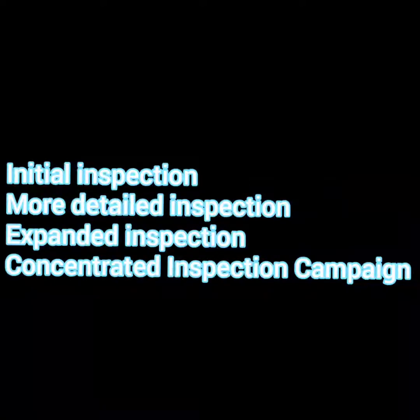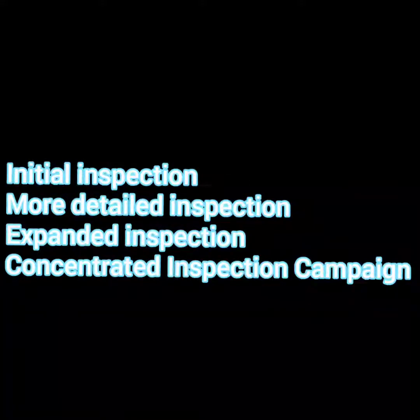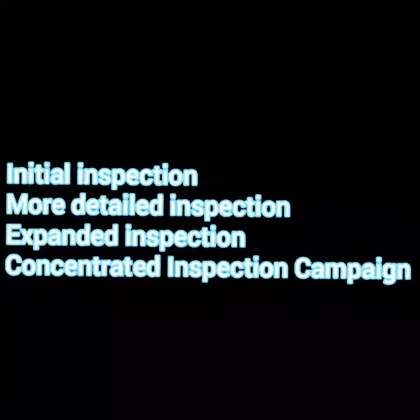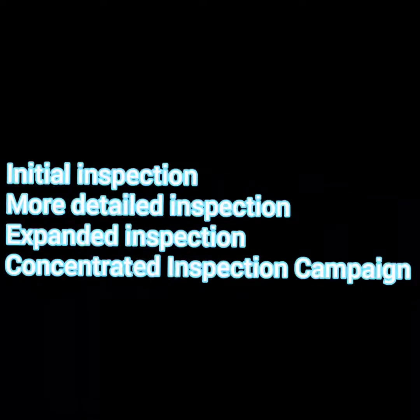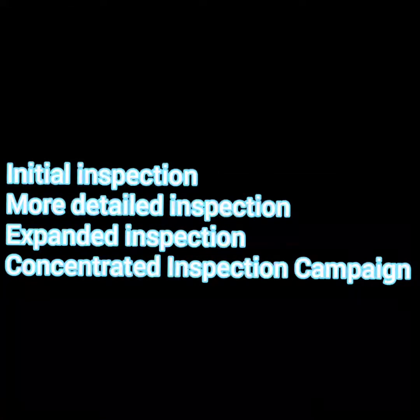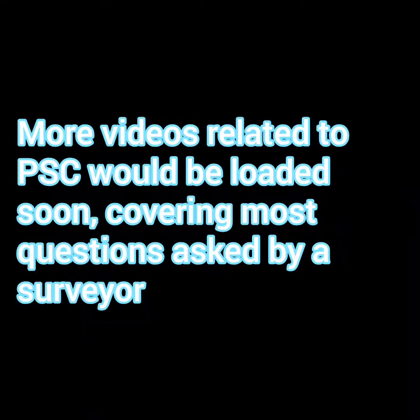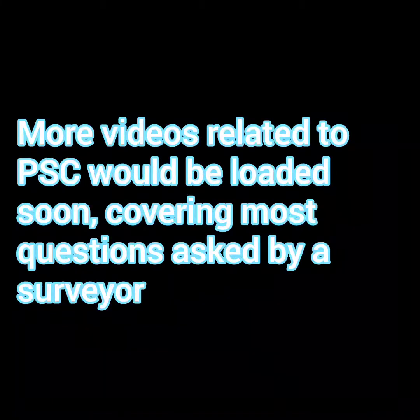The PSC inspector will come for an initial inspection and if he feels the ship looks substandard, he proceeds to a more detailed inspection, during which he may give deficiencies using different codes as detailed in the Port State Control Procedures, Assembly Resolution 1119, Session 30. In the next series on PSC, I'll be sharing more details about clear grounds, MOUs, what action can be taken in case of a detainable deficiency by the master, and more questions to clarify every concept of PSC.